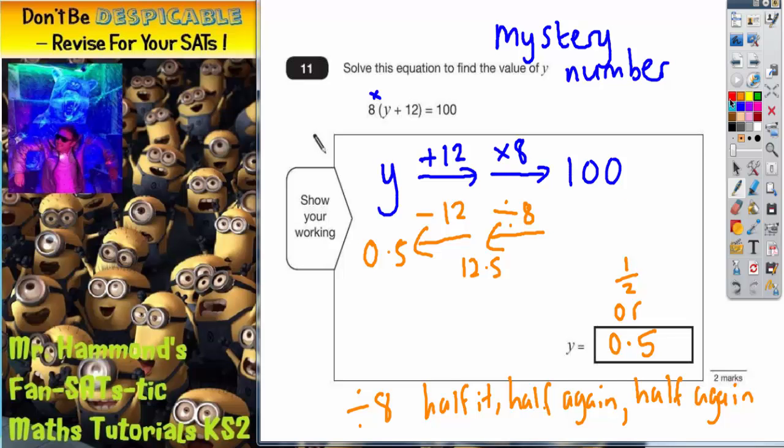It is always a good idea to check that your answer works. So if y is 0.5, 0.5 add 12 would be 12.5. So the bracket would come to 12.5. And 8 lots of 12.5, is it 100? Well, we could just do a quick column method to check.